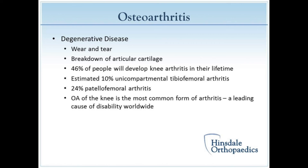We all have cartilage that lines the end of the bones. If you've seen the end of a chicken bone, it's smooth and white — that's the joint surface cartilage. It provides a smooth gliding surface that acts as a cushion or shock absorber in between the bones, and it protects the ends of the bone.